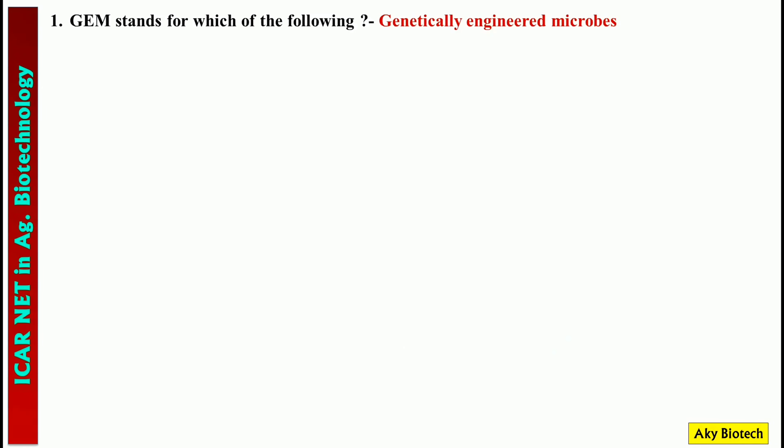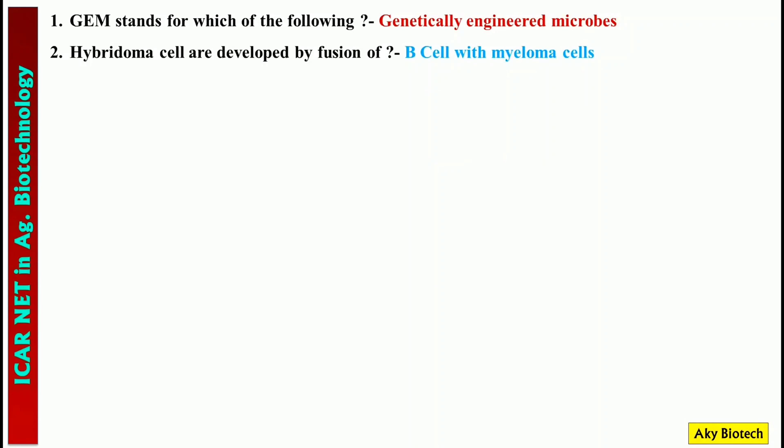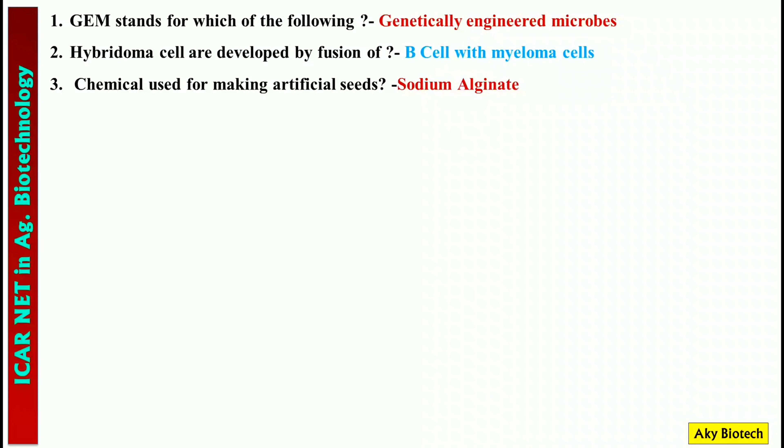Question 1: GEM stands for — it's Genetically Engineered Microbes. Question 2: Hybridoma cells are developed by the fusion of — B cells with myeloma cells. Question 3: The chemical used for making artificial seeds — it's sodium alginate.